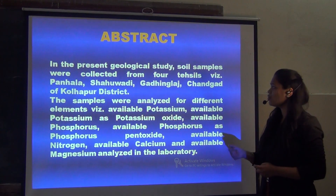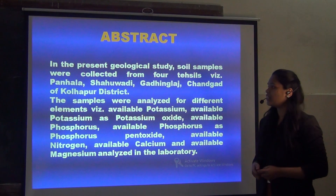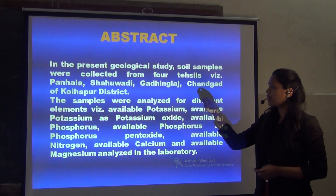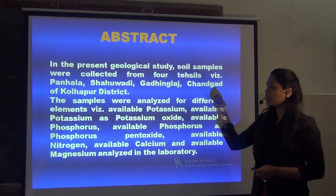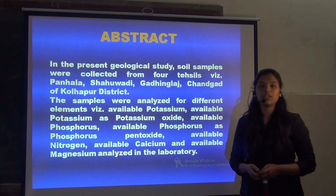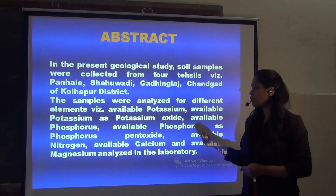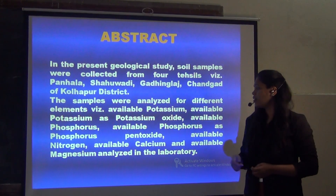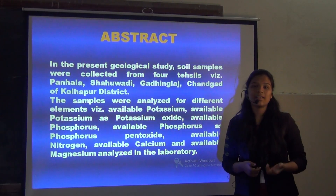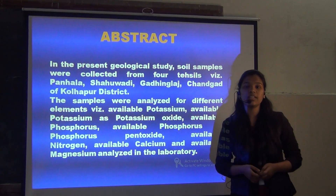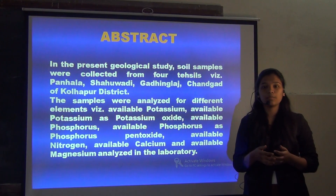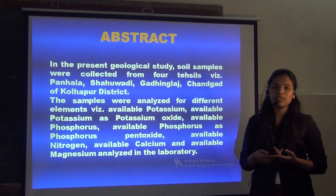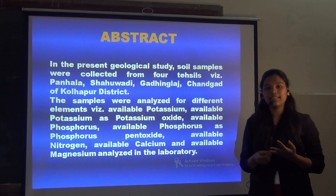Here is the abstract. In the present geological study, we collect the soil samples from 4 Dursils: Pannada, Shawwadi, Gurdiklis and Chandrat from Kola Pratastric. For these samples, we analyze different elements like Potassium and Potassium as Potassium Oxide, Phosphorus and Phosphorus as Phosphorus Pentaoxide, and also Calcium, Magnesium and Nitrogen.